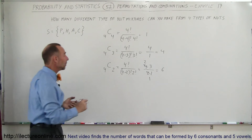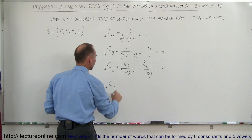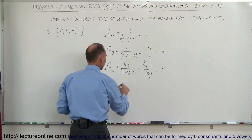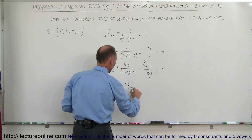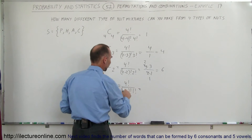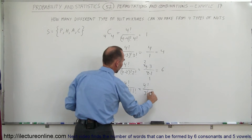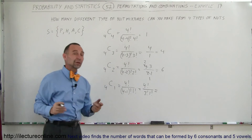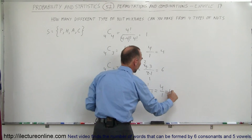Finally, taking one nut at a time: C(4,1) equals four factorial divided by (four minus one) factorial times one factorial, which is four factorial divided by three factorial times one factorial. Four factorial divided by three factorial is simply four divided by one, which equals four.